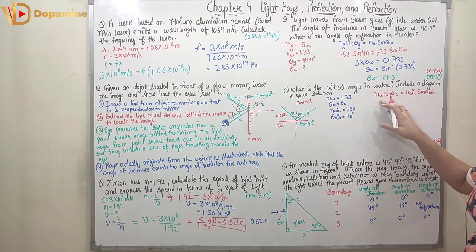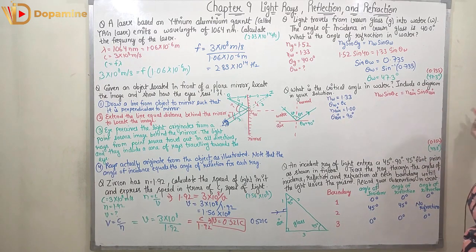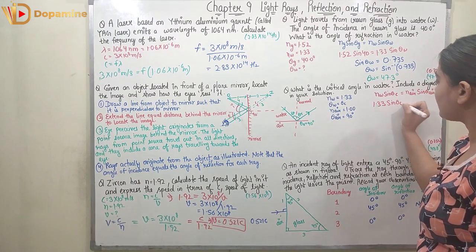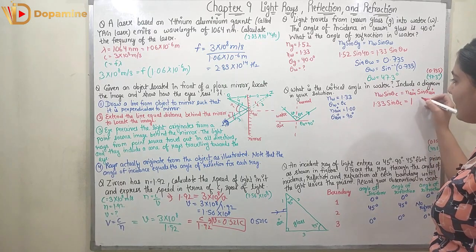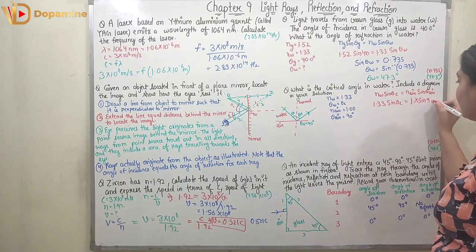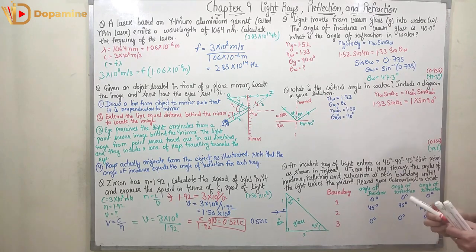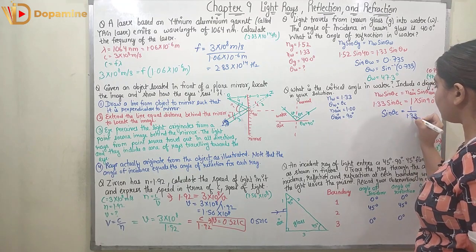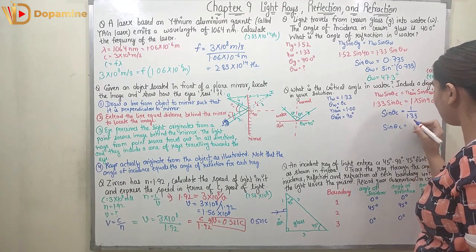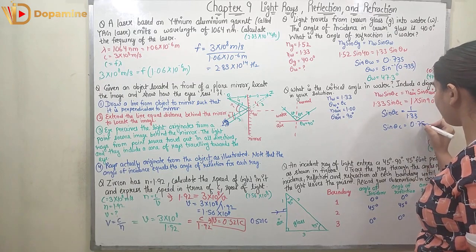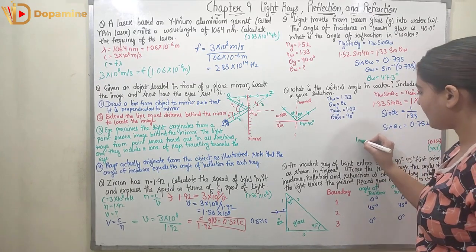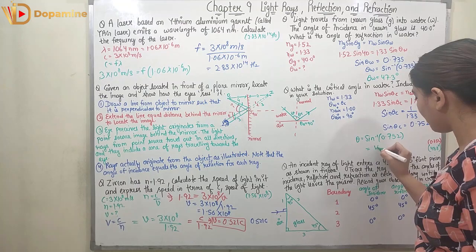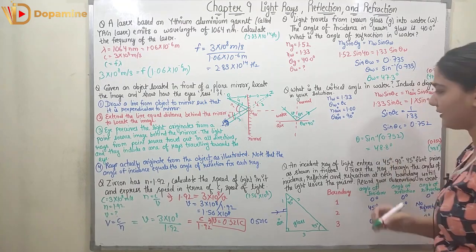Using Snell's law: n_w × sin θ_c = n_air × sin 90°. So 1.33 × sin θ_c = 1 × 1. Therefore sin θ_c = 1 / 1.33 = 0.752, and θ_c = sin⁻¹(0.752) = 48.8°. I hope you understood this question.